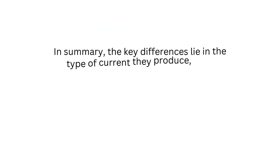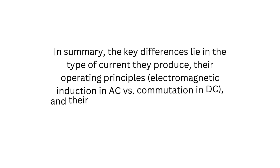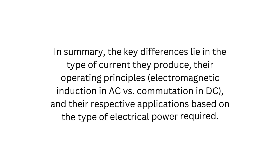In summary, the key differences lie in the type of current they produce, their operating principles — electromagnetic induction in AC versus commutation in DC — and their respective applications based on the type of electrical power required.